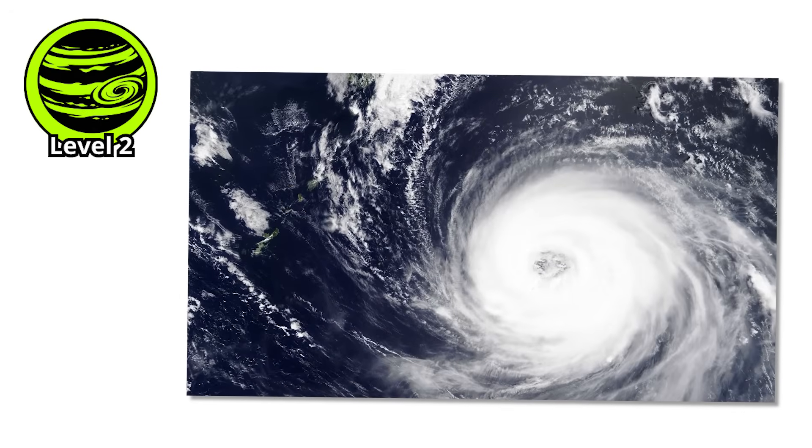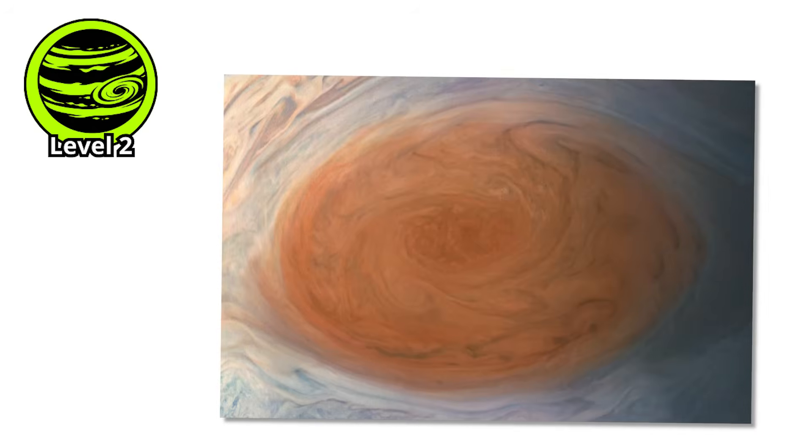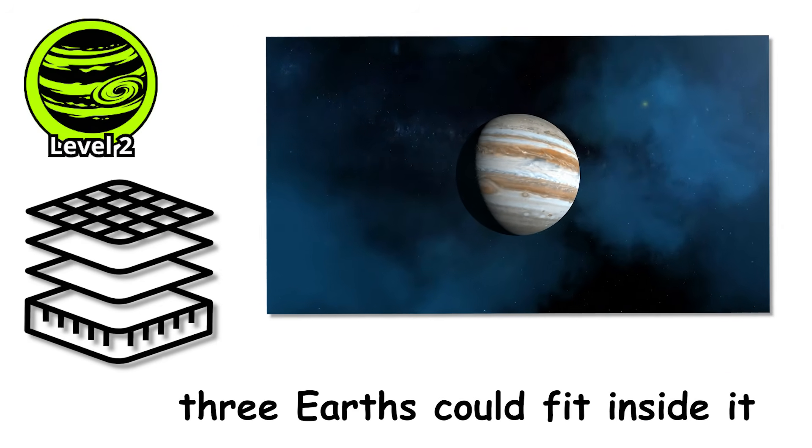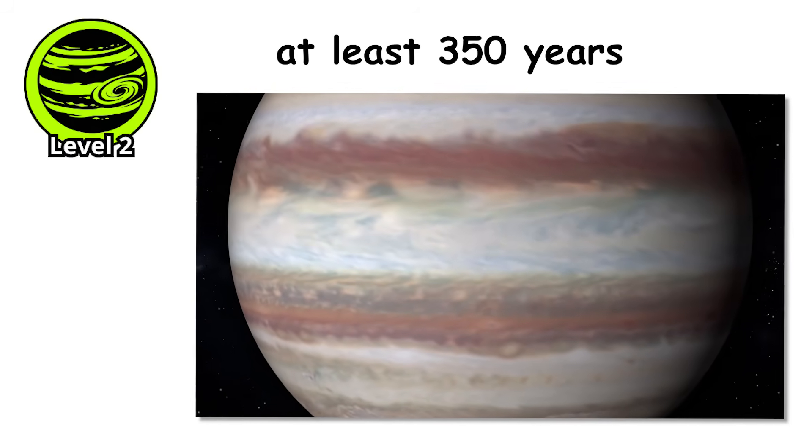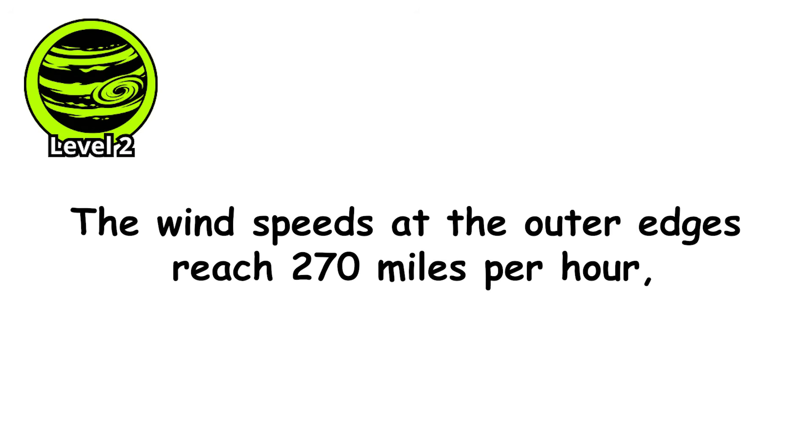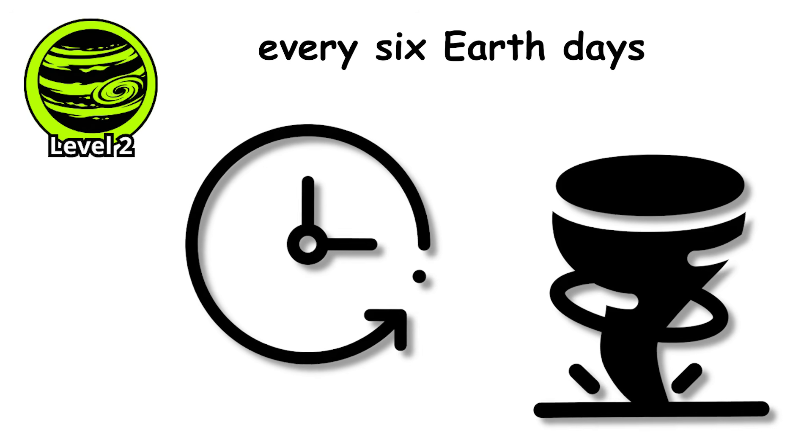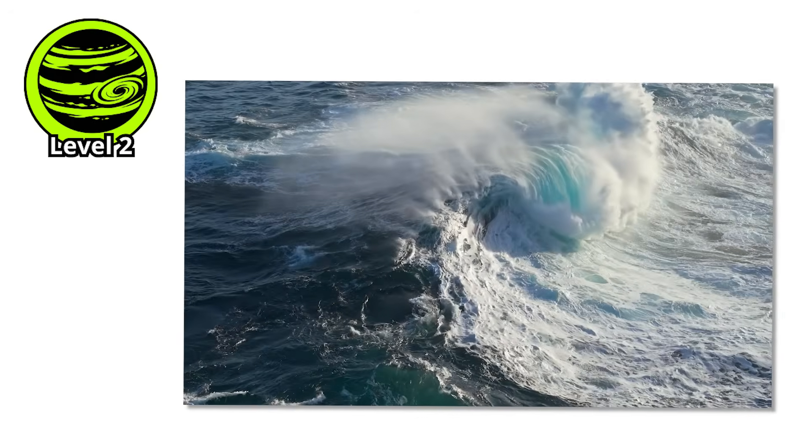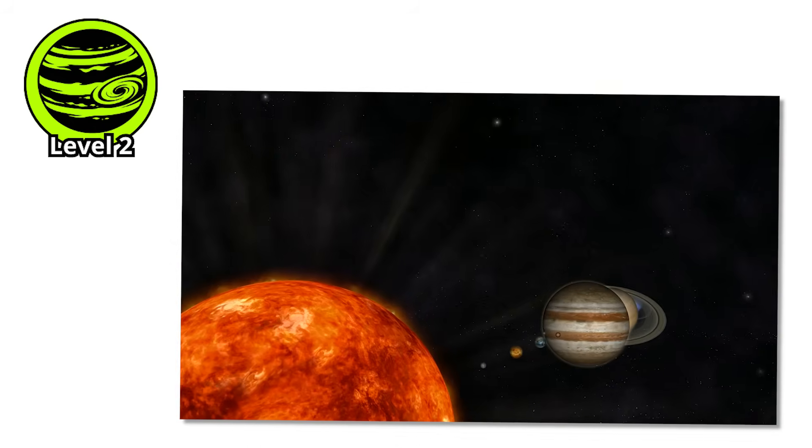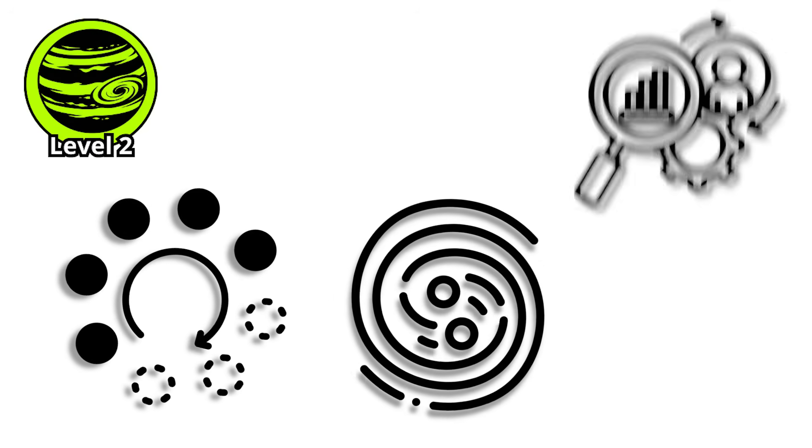Level 2. Take everything you know about hurricanes and multiply it by a thousand. Then add another thousand. You're still not close to understanding the Great Red Spot. This storm on Jupiter is so large that three Earths could fit inside it comfortably with room to spare. It's been raging for at least 350 years, possibly much longer. The wind speeds at the outer edges reach 270 miles per hour, and the entire vortex rotates counterclockwise every six Earth days. Unlike hurricanes, which draw energy from warm ocean water, the Great Red Spot is powered by Jupiter's internal heat. Jupiter radiates more energy than it receives from the Sun, slowly contracting and releasing gravitational energy left over from its formation.